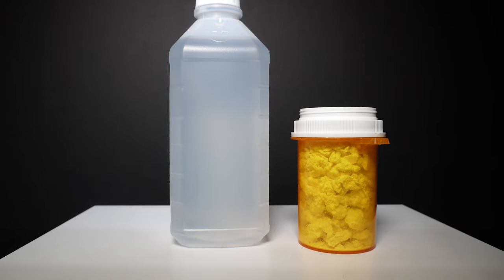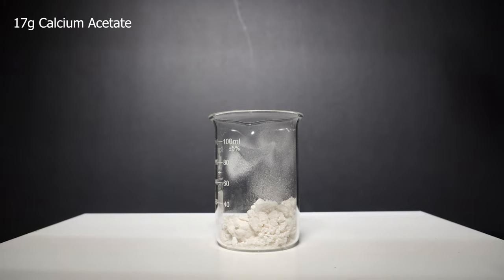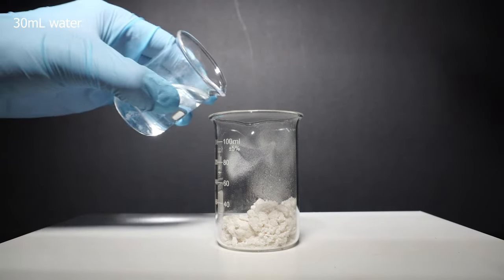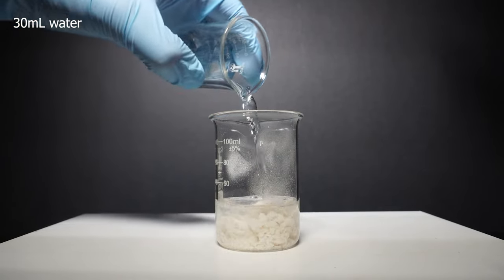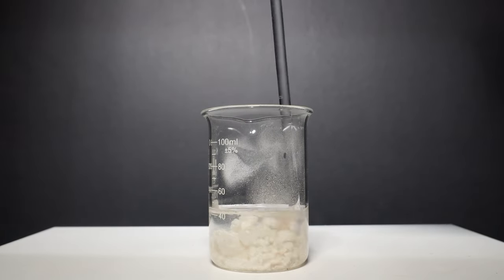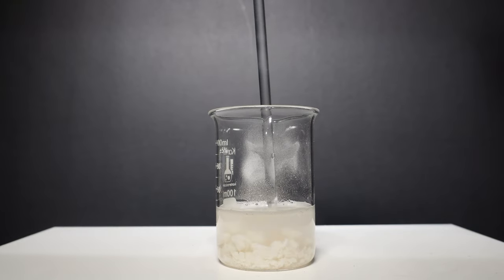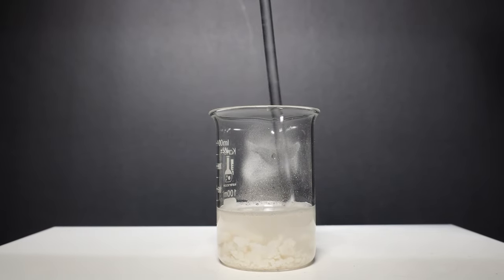To start off we will take 17 grams of calcium acetate which I have already added to a beaker. Following this we will add 30 milliliters of distilled water. I start by breaking up all of the larger chunks followed by stirring it around. This can take some time to dissolve though we really want as much to dissolve as possible.